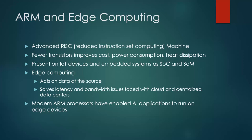Let's start with a brief overview of ARM and edge computing. ARM stands for Advanced RISC Machine, where RISC stands for Reduced Instruction Set Computing. ARM-based processors have typically fewer transistors as compared to CISC architecture-based processors like x86, which improves cost, power consumption, and heat dissipation. This is why ARM processors are present on most IoT devices and embedded systems in the form of system-on-chip and system-on-module.